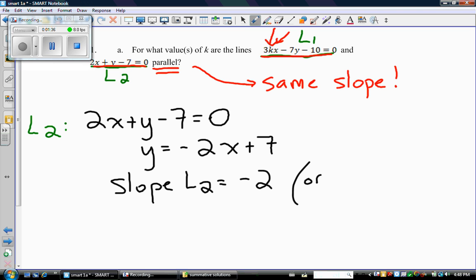Or if you want, negative 2 over 1. Good, so I found the slope of line 2. Here it is, so I don't lose it.